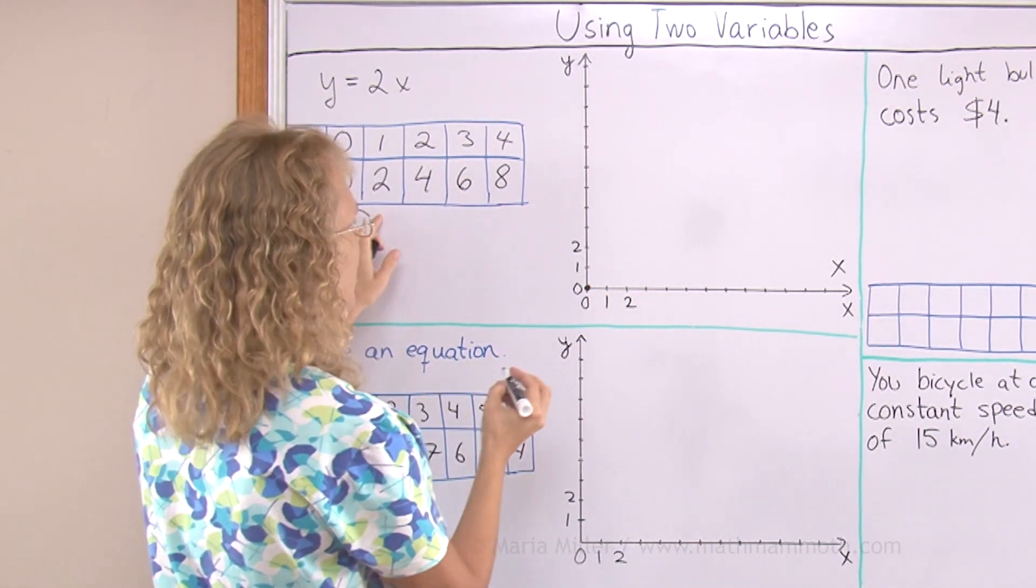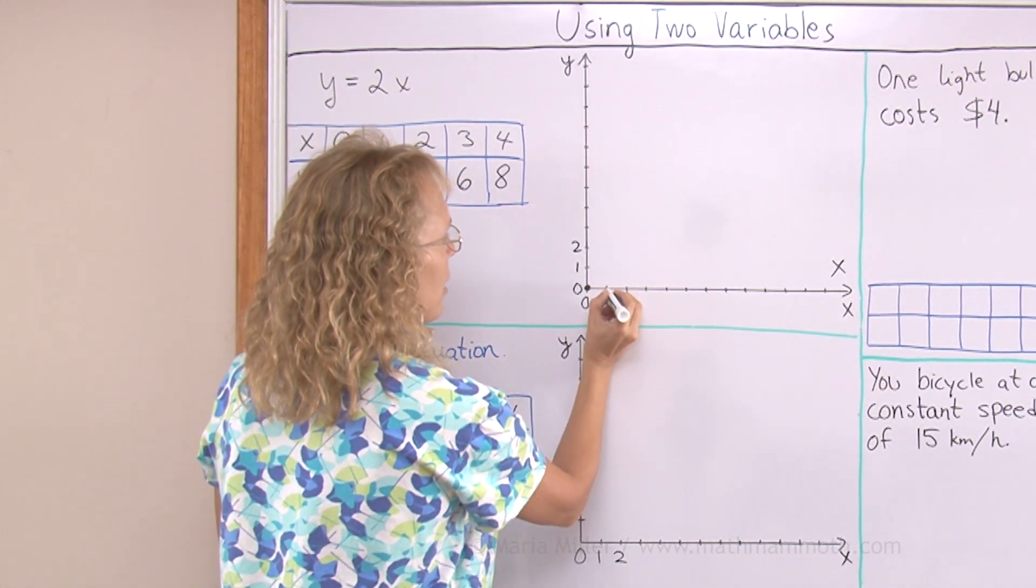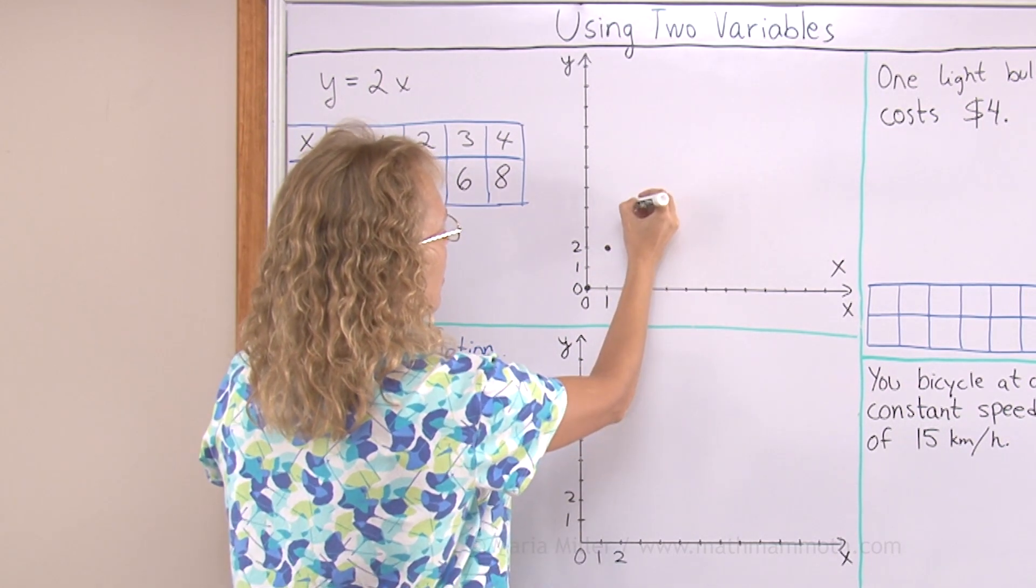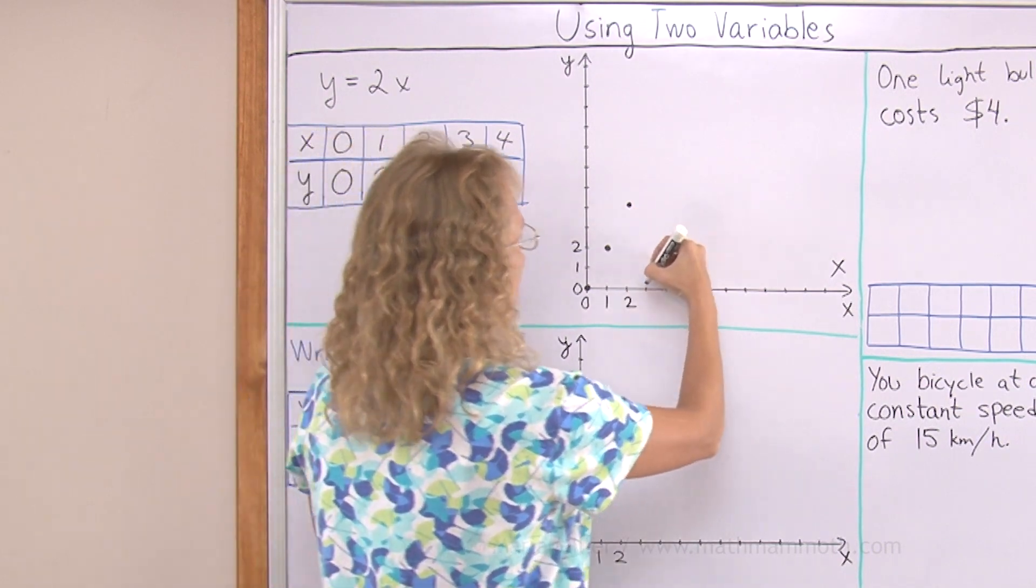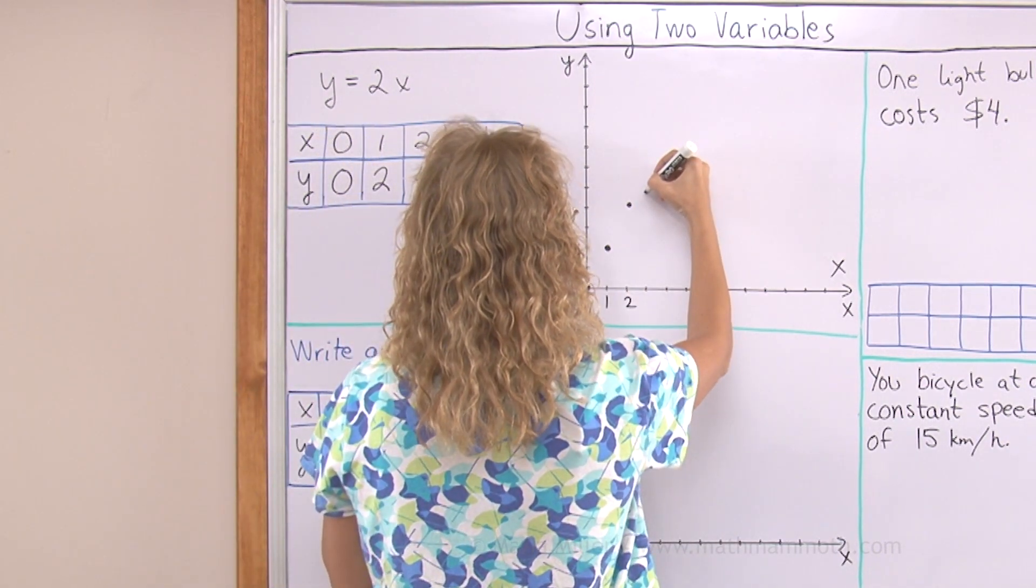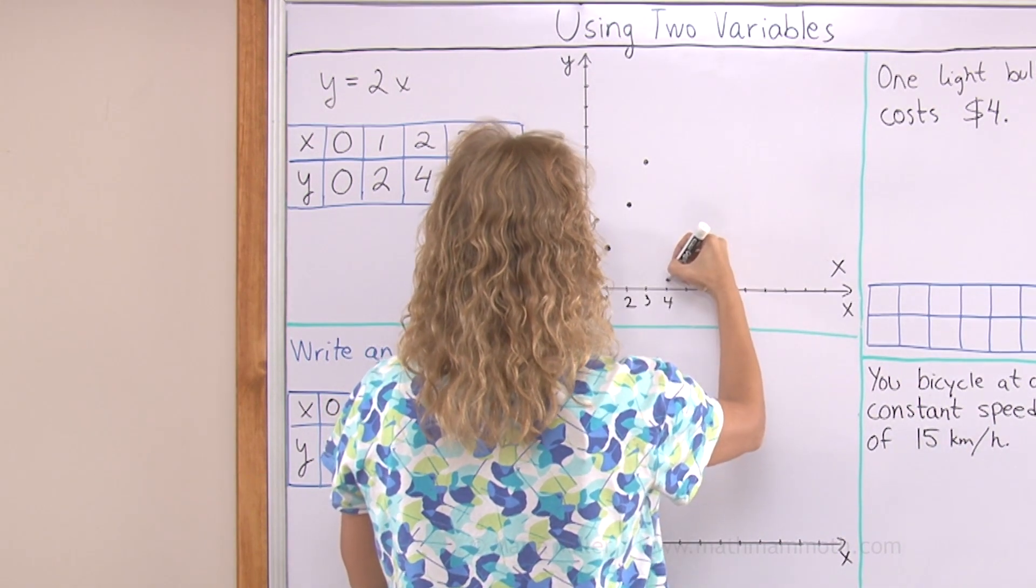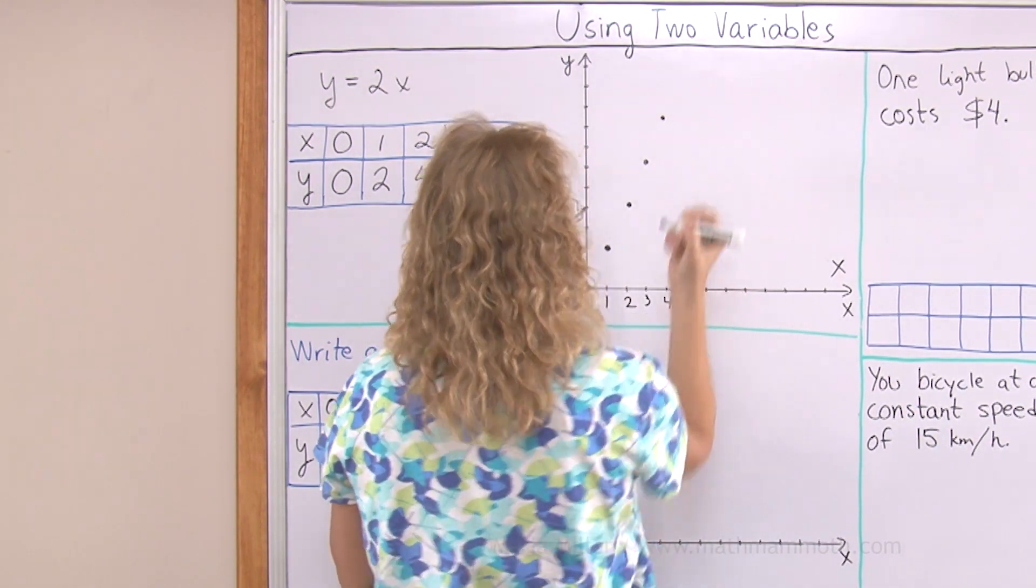The second point is 1, 2. I go 1 this way and 2 up. And then 2, 4. 2 here and 4 up. And then 3 and 6. 4 and 8. Like that.